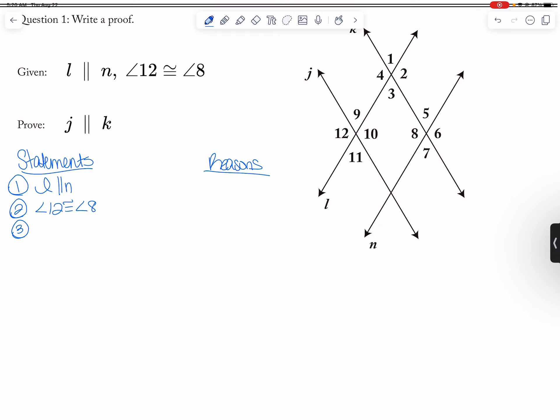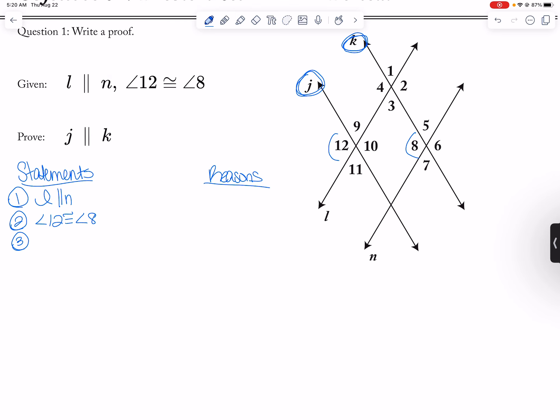Okay. So I have 12 is congruent to 8. So that was given. What am I trying to prove? I'm trying to prove that J and K are parallel to each other. So then that way, somehow along the way, if those are parallel, then I have to either have to use this transversal or this transversal in order to make them parallel by using angles that are congruent. So if I can find that with one of the transversals that one of the pairs of angles are congruent, then I can prove with the converse that they are parallel.